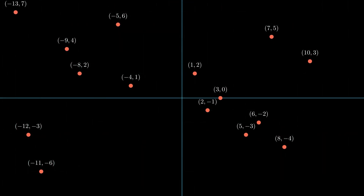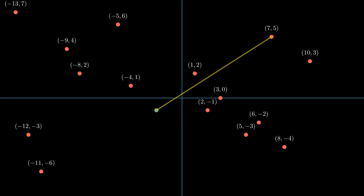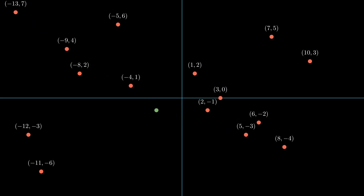A KD tree, or k-dimensional tree, is a space partitioning data structure that lets us organize data containing k dimensions. It is especially useful for efficiently finding the nearest neighbor of a point on a plane. Imagine we have a set of points on a two-dimensional plane and we want to find the closest point to a target location. If these points were stored in a simple array, we would need to compare the target to every single point in the list one by one, making a total of n comparisons to find its nearest neighbor. This would be the naive approach, and we can do better.